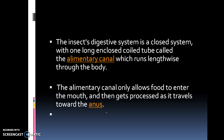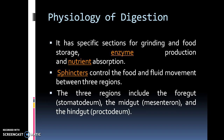The insect digestive system is a closed system with one long enclosed coil tube called the alimentary canal, which runs lengthwise throughout the body. The alimentary canal only allows food to enter the mouth and then gets processed as it travels towards the anus. It has specific sections for grinding and food storage, enzyme production and nutrient absorption. Sphincters control the food and fluid movement between the three regions: foregut, midgut and hindgut.